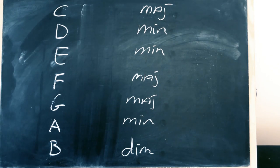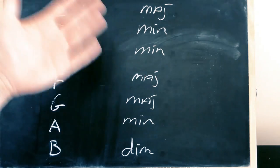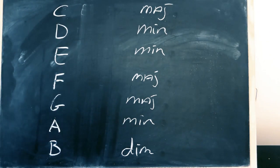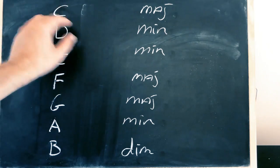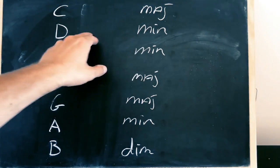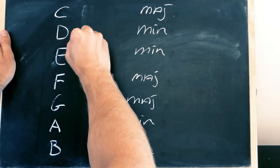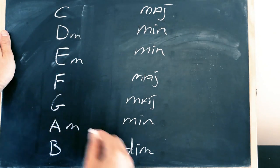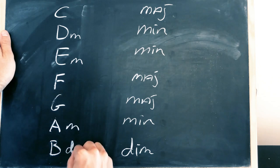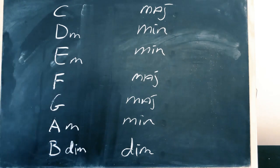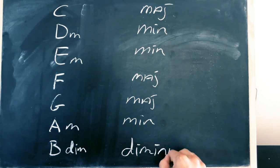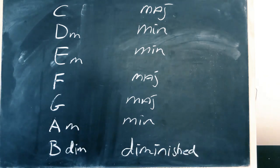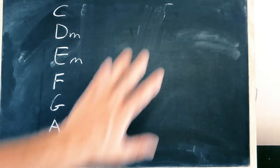So how would you write that down without writing all the notes? For major, we simply don't put anything — just a C. For minor, we put a little 'm' — so Dm. And for diminished, we put 'dim'.